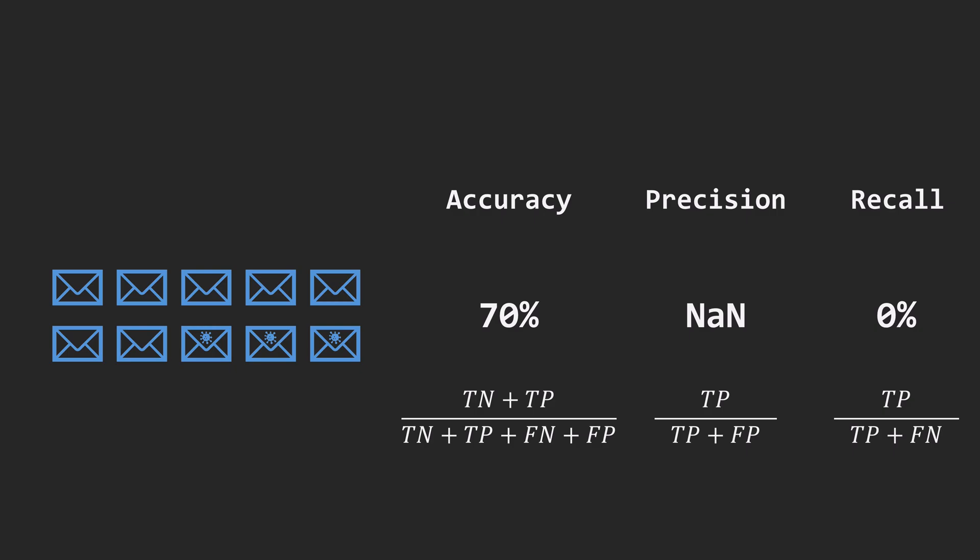It simply doesn't work and is equivalent to having no spam detector at all. And we still get 70% accuracy here. This highlights why multiple metrics are essential, especially for imbalanced datasets when one class occurs more frequently than the other.